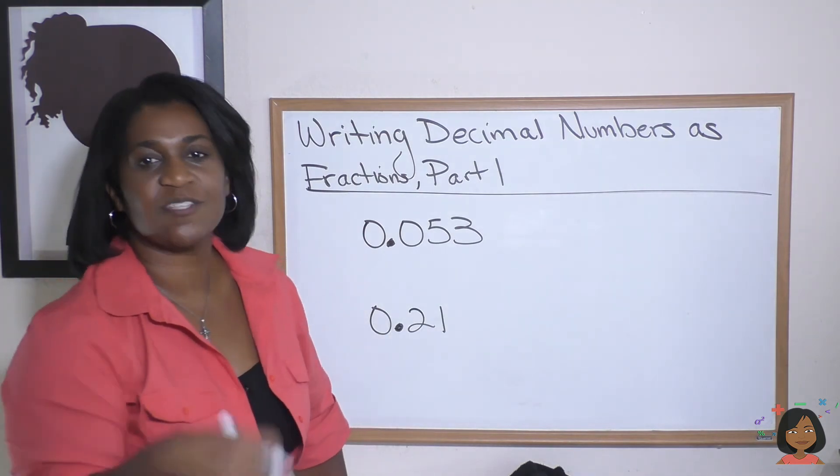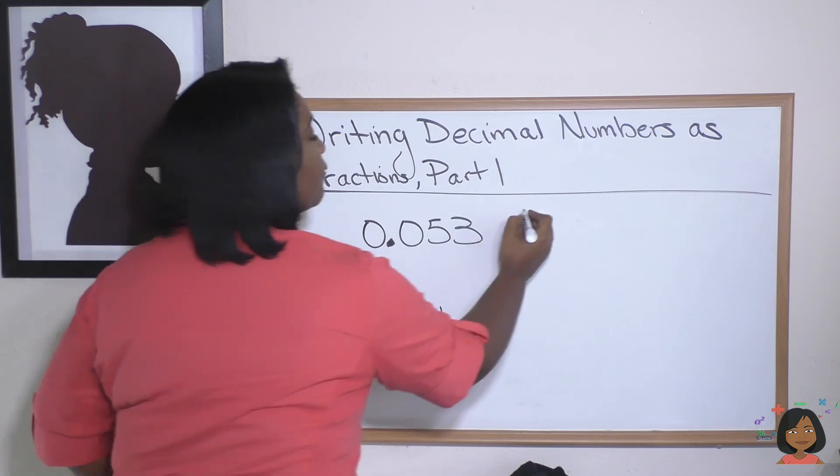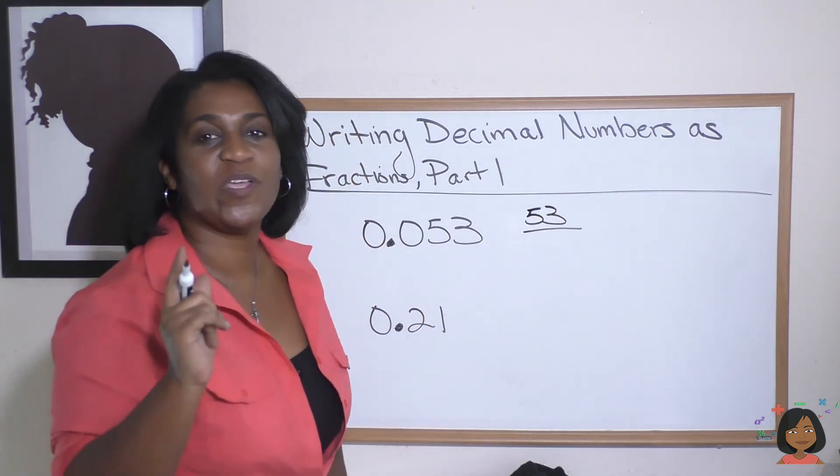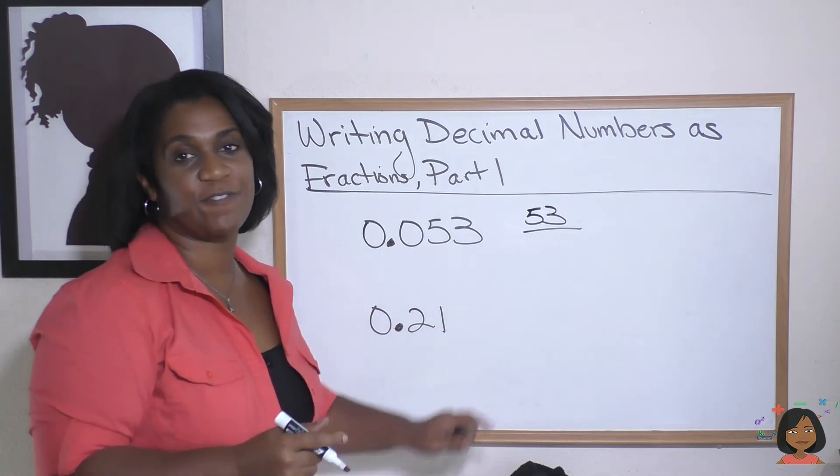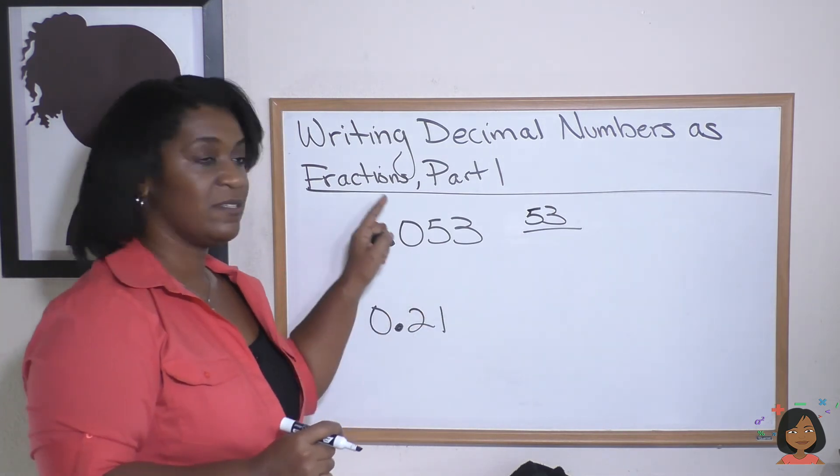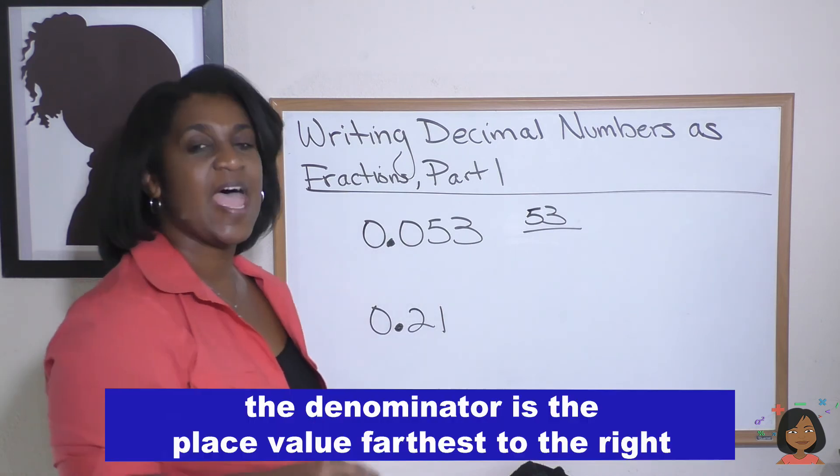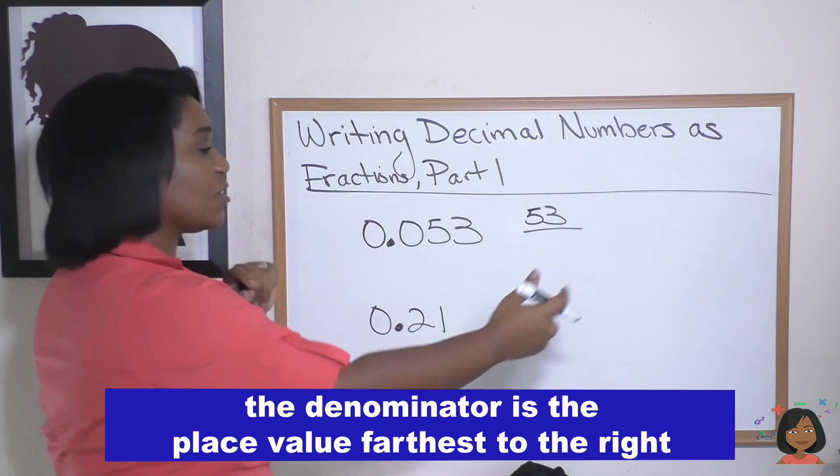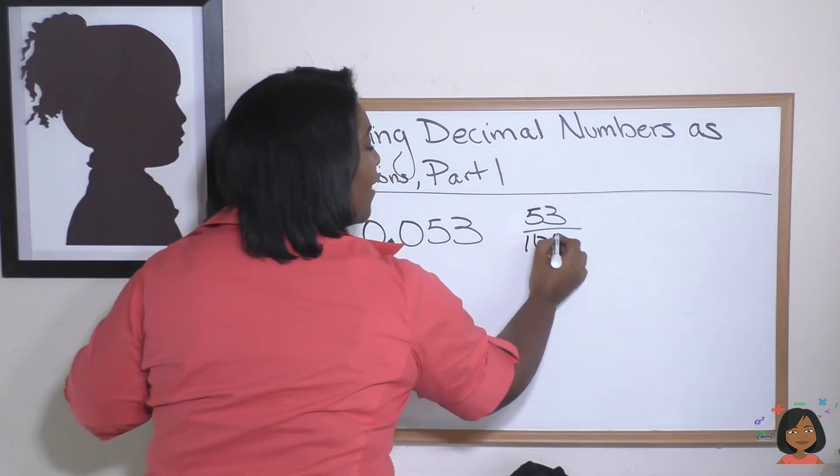Well, the first thing is we write our 53 on top for our numerator. But what about the denominator? We go out to the furthest place value, the smallest place value, which here we have our tens, our hundreds, our thousandths, and we put it over the place value most to the right, which is 1000.